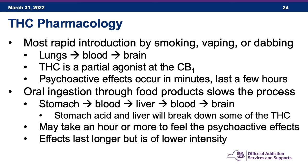When people orally ingest THC through edibles, the process slows: THC goes into the stomach, gets absorbed into the blood, passes through the liver, and then goes to the brain. The stomach acid and liver break down some of the THC, so less reaches the brain. It may take an hour or more to feel psychoactive effects, but the effects last longer — though at lower intensity.